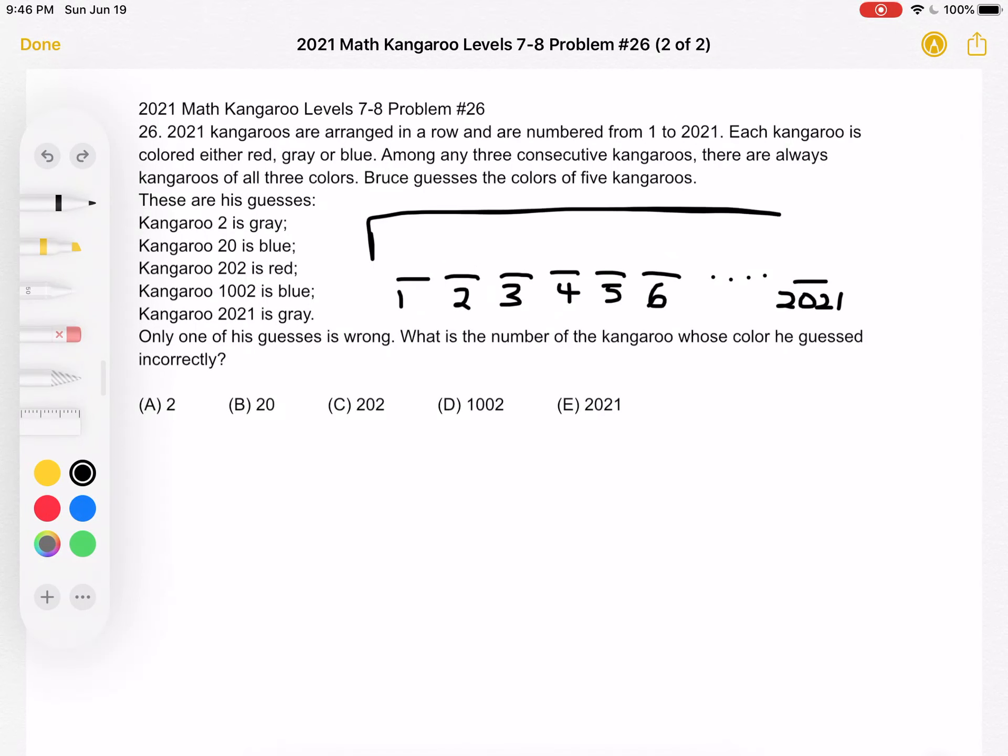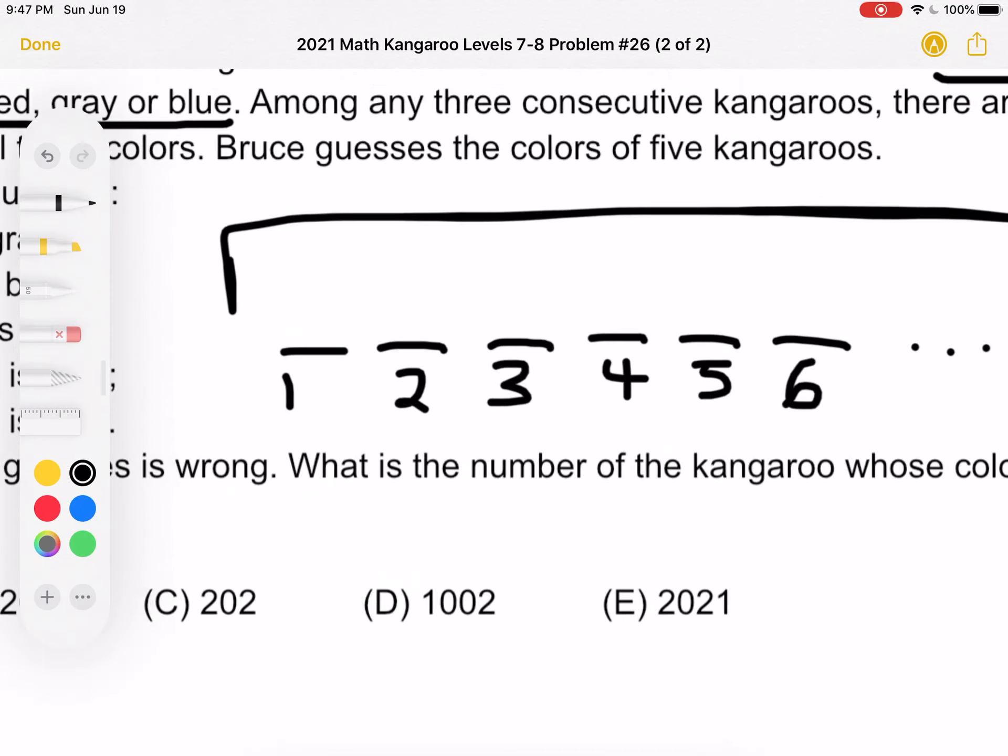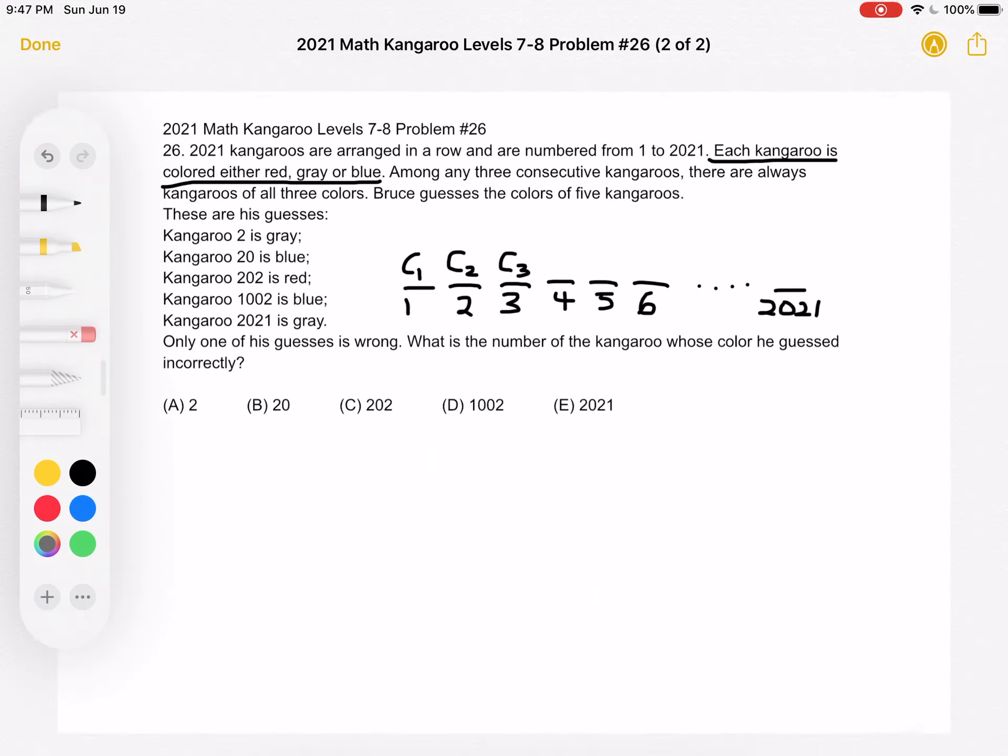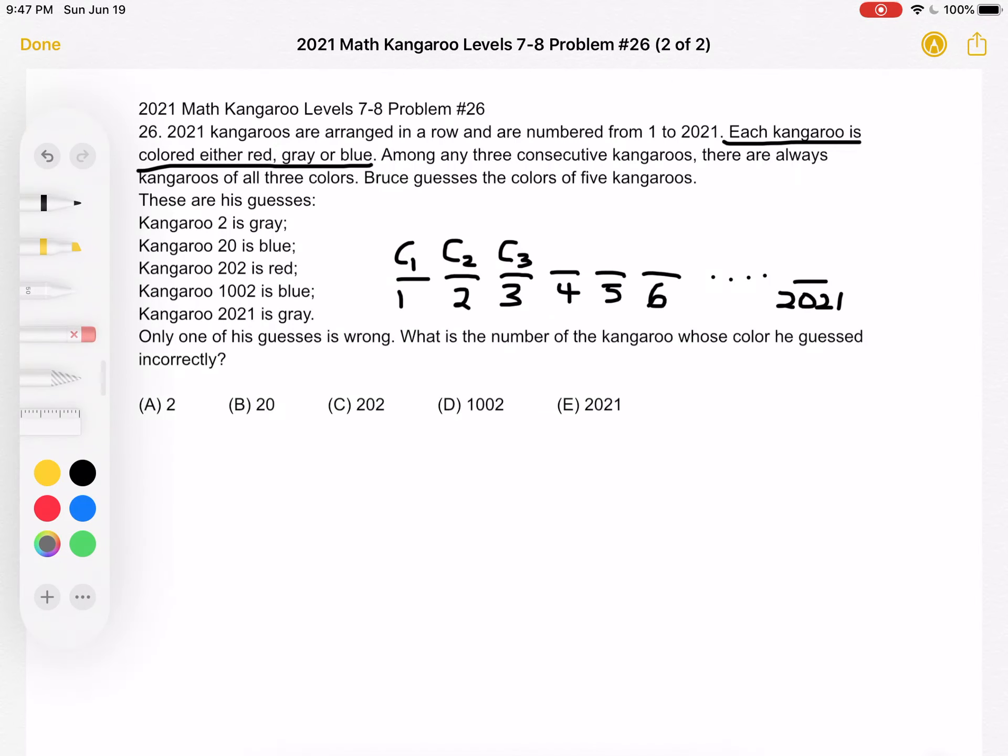So let's take a look. We know that each kangaroo is colored either red, gray, or blue. So just as an example, let's say we have color 1 in position 1, color 2, color 3.